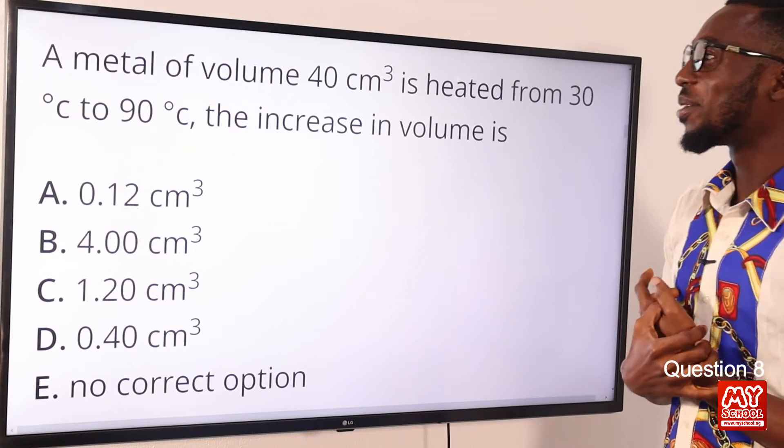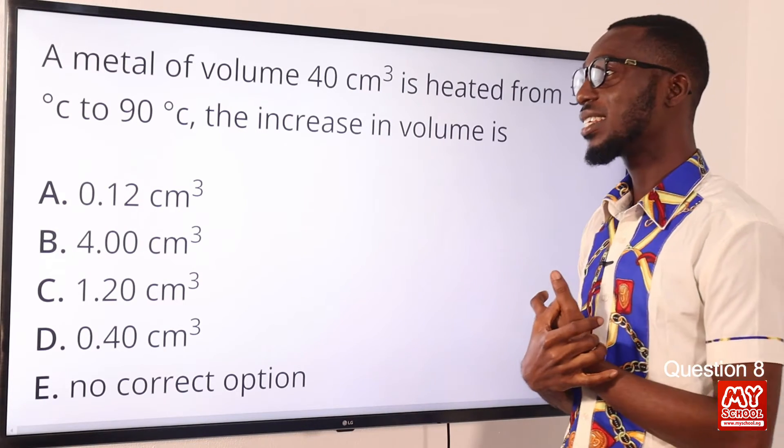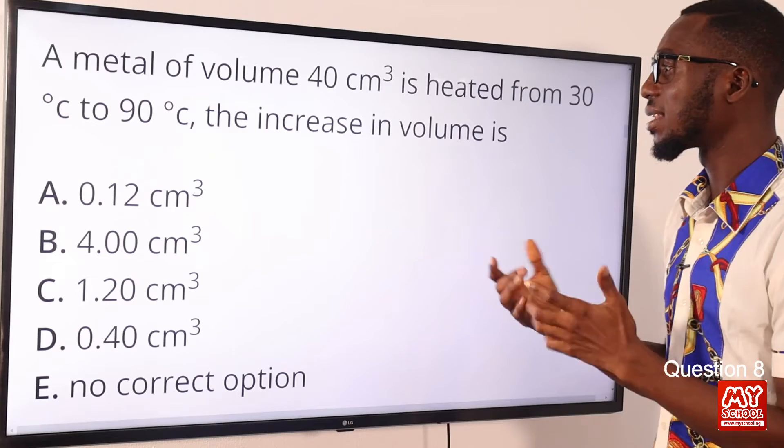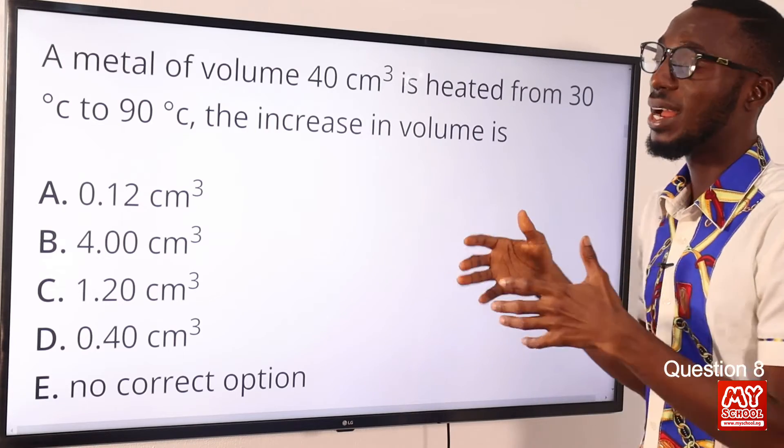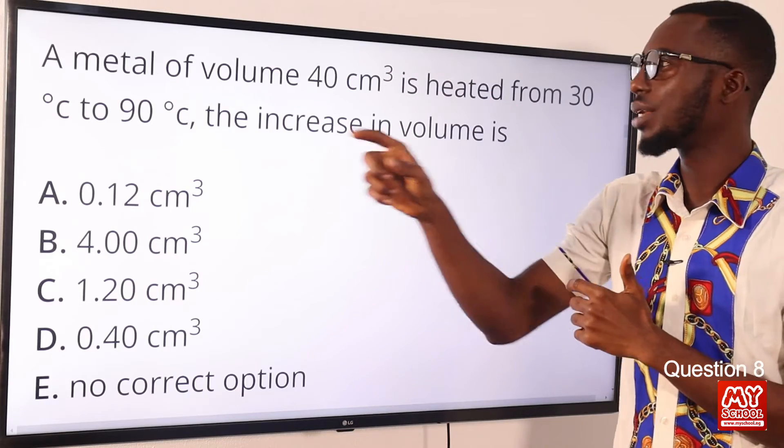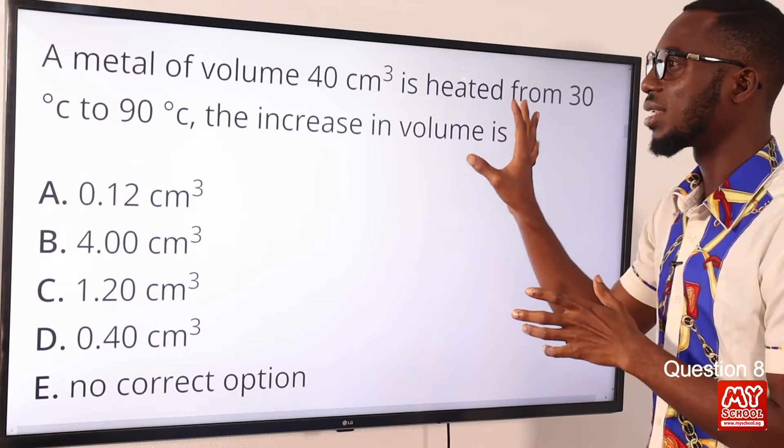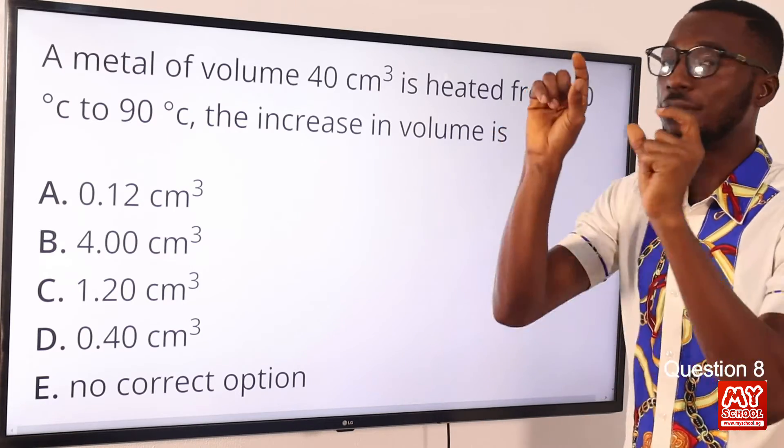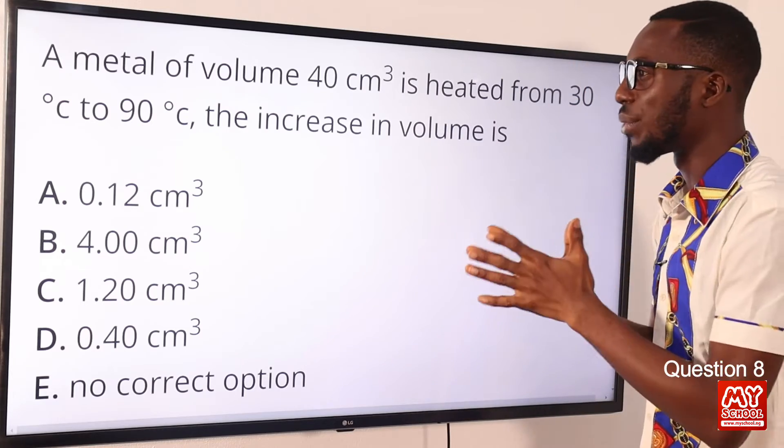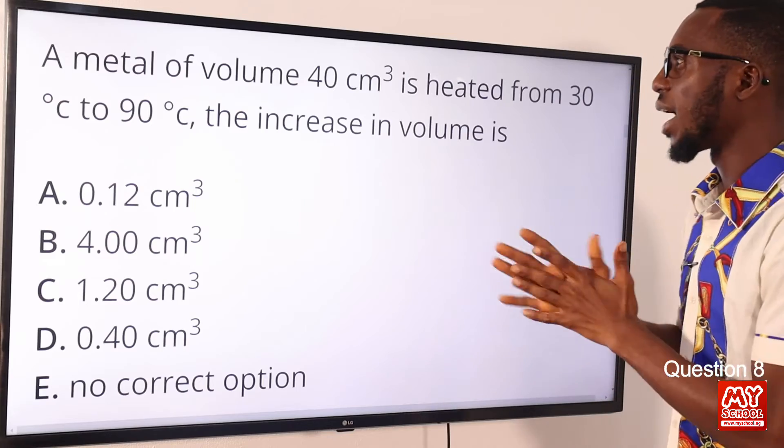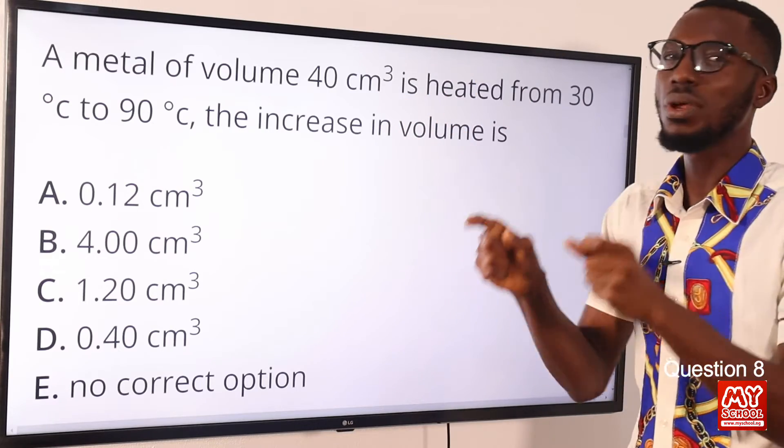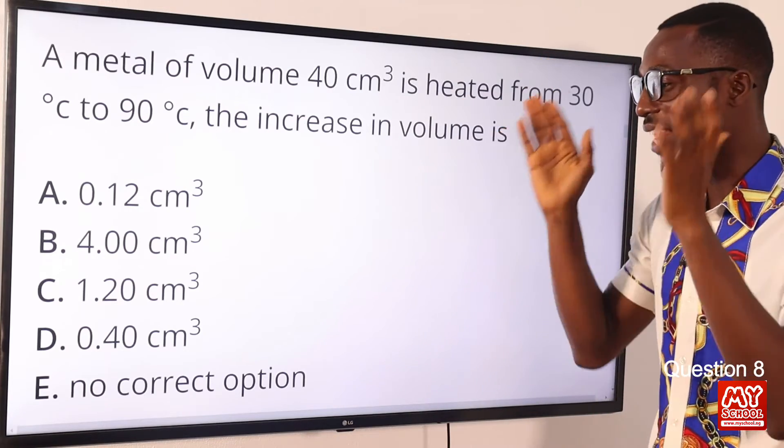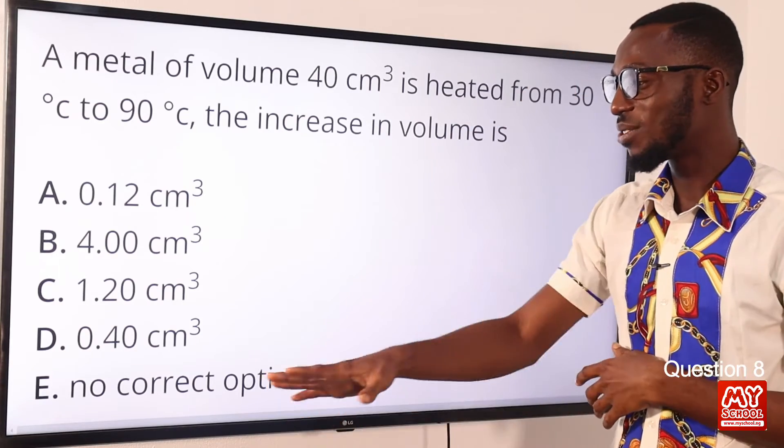Question 8. A matter of volume 40 cm³ is heated from 30 degrees to 90 degrees. The increase in volume is what? So I'm going to take this as cubic expansivity. And we know that that has the value of 3 times alpha or 3 times linear expansivity. So we are asked to find the final volume. So this tells us that this question is incomplete. Because when you consider the formula for cubic expansivity, it's going to be gamma equals V2 minus V1 over V1 times change in temperature. So you can see that we have two parameters missing already. We have V2 that we have to look for, it's missing. And we have no value provided for the cubic expansivity. So without any further problem, the correct option here is option E, no correct option.